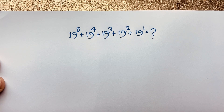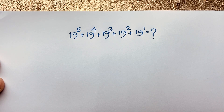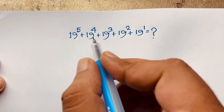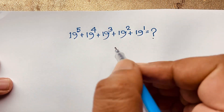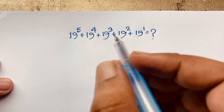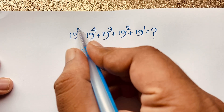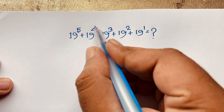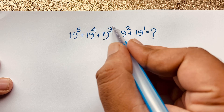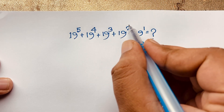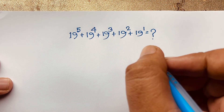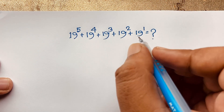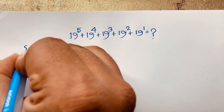Hello everyone, welcome to Russia's Classroom. Today we have solved a nice math problem without a calculator — a Math Olympiad question. The question is: 19 power 5 plus 19 power 4 plus 19 power 3 plus 19 power 2 plus 19 power 1 is equal to what? How to solve this interesting maths problem? Solution: